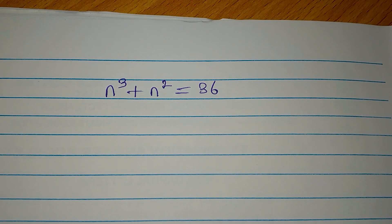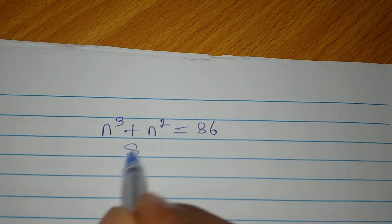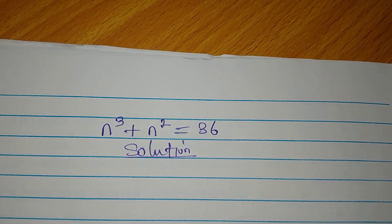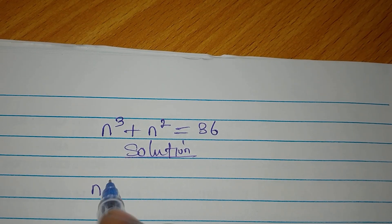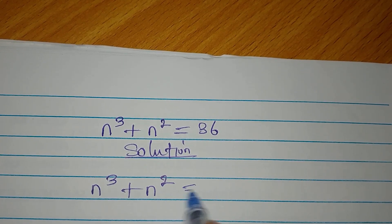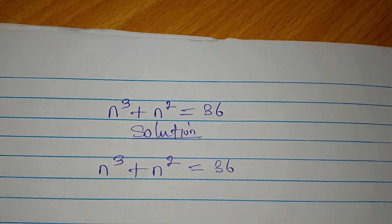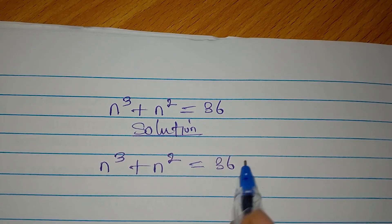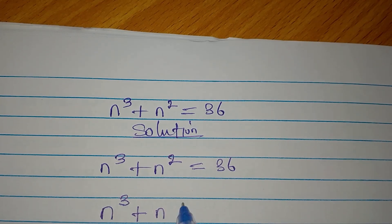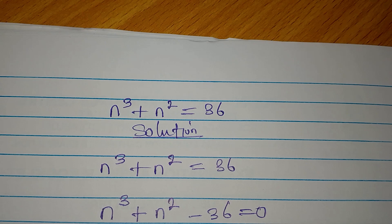Let's provide the solution to this problem very quickly. We have n to the power of 3 plus n to the power of 2 equals 36. Our target is to bring this to the left, so we now have n to the power of 3 plus n to the power of 2 minus 36 equals zero.